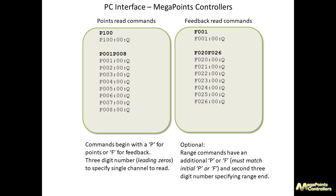If you take a look at this slide it shows you the command structure — the bold items are what would be entered via the serial port and the non-bold is what's returned. At the top left for reading points, you enter P100 with a carriage return, and the interface returns P100 colon 00 colon Q, indicating that points 100 are not set or zero. The Q indicates the response is because of a query. You can also enter ranges: P001 to P008 would list all points from P001 down to P008.